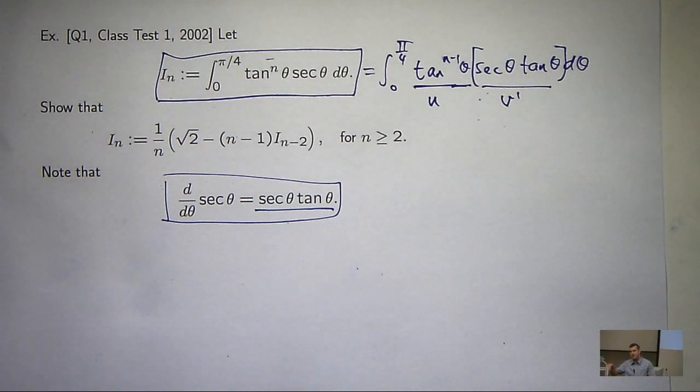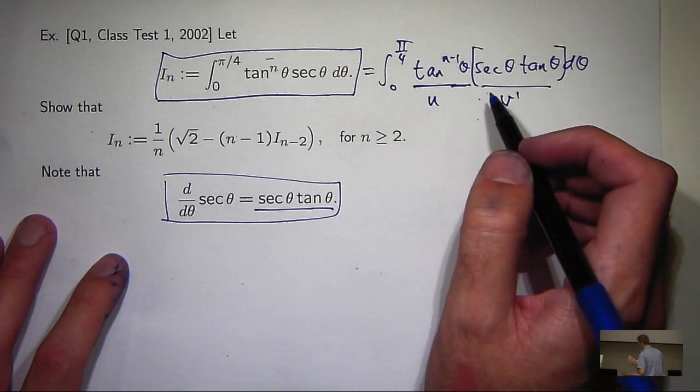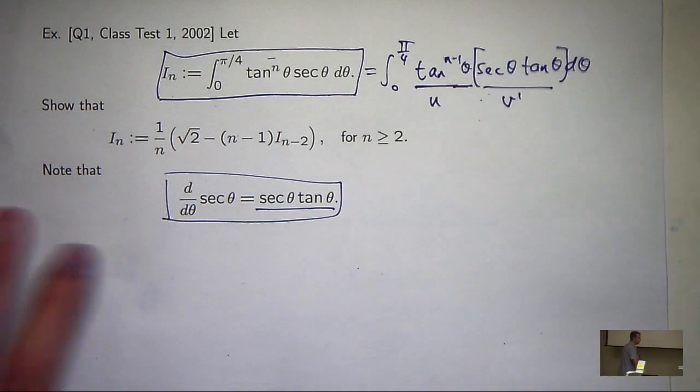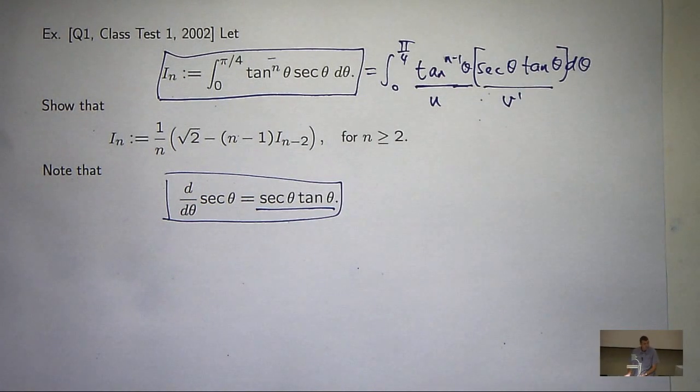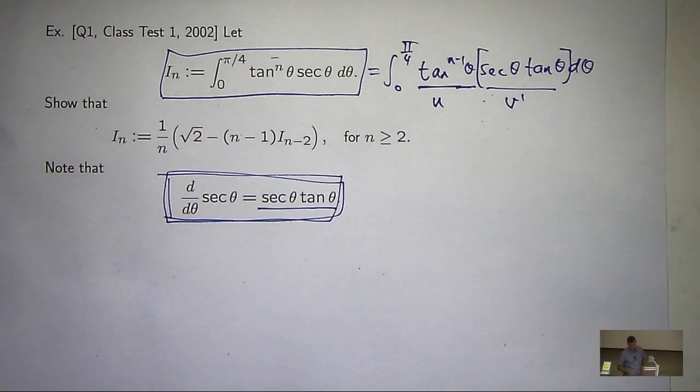So with those, I can then differentiate and decrease this. Or I can actually use what I'm given here and try to incorporate that into my choice. So if I make the choice v dash equals sec theta tan theta, I'm going to have to integrate that. So what will the integral be? Sec theta.